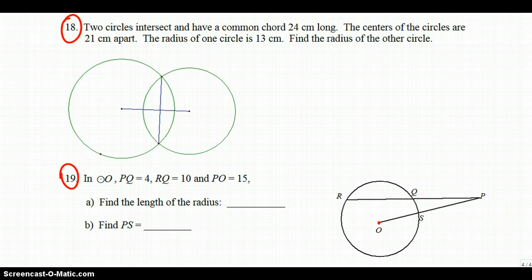This is problem number 18. Two circles are 24 centimeters apart from their centers. I drew that wrong. The chord is 24 centimeters, so when they intersect each other, they're both 12 centimeters long. The centers are 21 centimeters apart, so this length is 21.